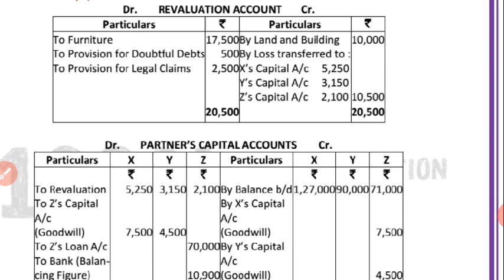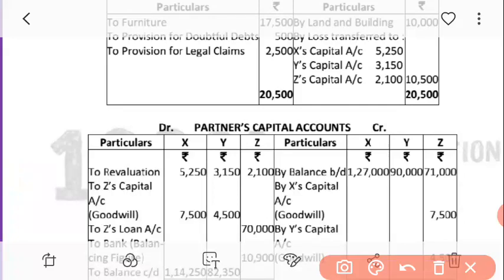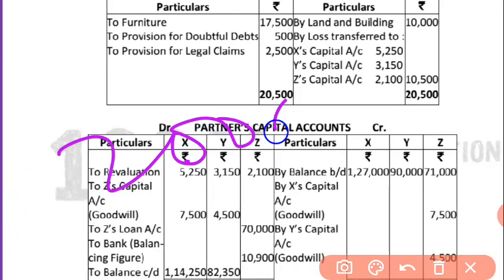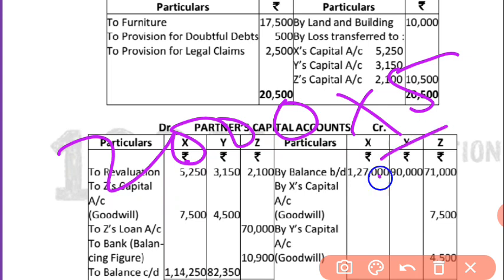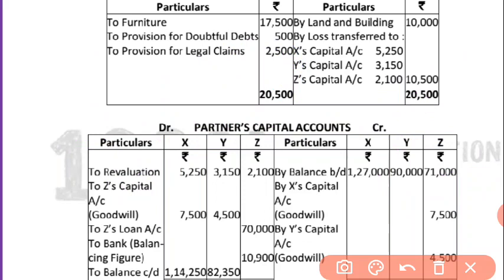5% of 20,000 debtors will be 20,000 × 5/100 = 1,000. But in the balance sheet there was already a provision of 500, so only the remaining 500 needs to be added. That is why I have transferred 'To Provision for Doubtful Debts 500' on the debit side of the revaluation account.